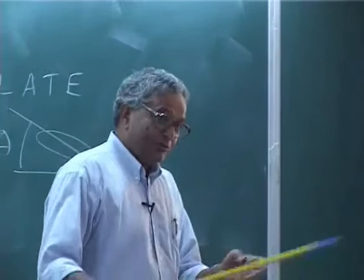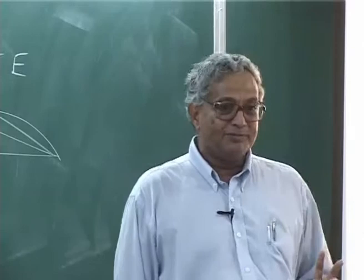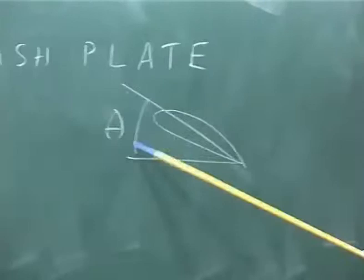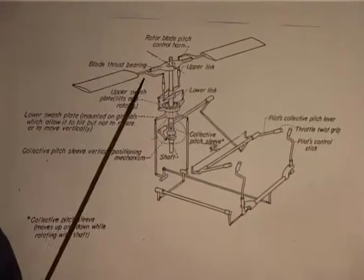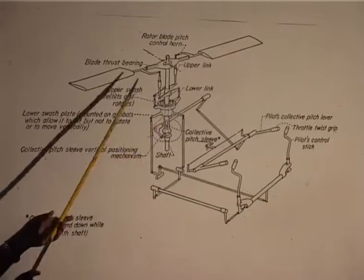Now if you want to make small autonomous micro air vehicles, there you may vary the RPM — the control may be through RPM control. But here RPM is fixed; what you have control of is only the pitch angle, pitch input. When the pilot pulls up, what he does is through the swash plate mechanism. It has two components: one is a non-rotating part, another one is a rotating part, with some bearings in between — that is all.